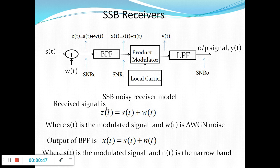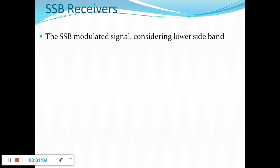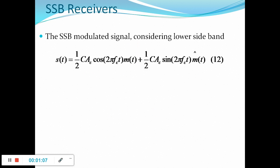The received signal Z(t) is the modulated signal plus the white noise. The output of the bandpass filter will be the modulated signal and the narrowband noise. Considering the lower sideband of the SSB signal, we have the expression for SSB as: S(t) = (1/2) C·Ac·cos(2π·Fc·t)·m(t) + (1/2) C·Ac·sin(2π·Fc·t)·m̂(t).